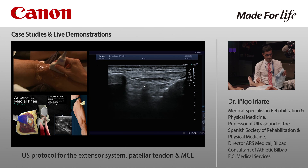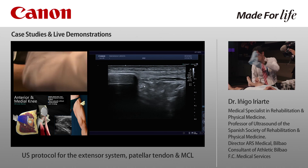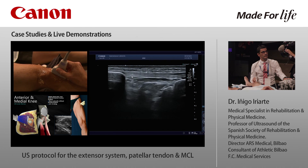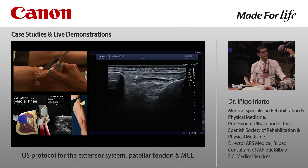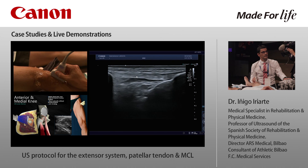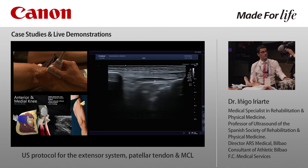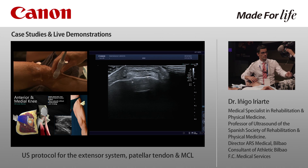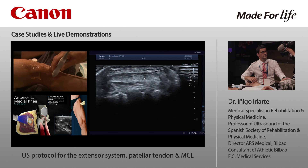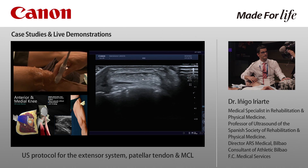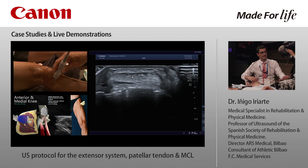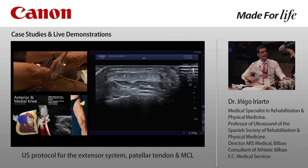Now the patellar tendon. We start with the probe in the long axis at the edge of the patella, assessing the integrity of the fibers — the fibrillar pattern — all the way to the insertion in the tibia. Then we turn the probe 90 degrees to assess the tendon in the short axis. It is very important to spend time assessing the correct pattern; all the tendons must look exactly the same, with no hyperechoic areas or differences.